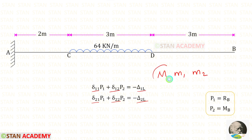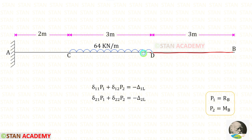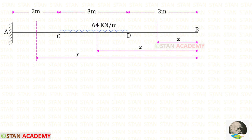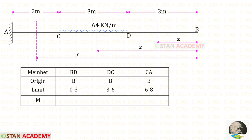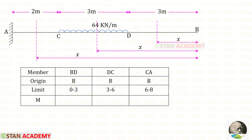First let us find the moment M using the given loads. We have to make sections in this beam. There are 3 different parts: BD, DC, and CA, so we make 3 sections — one in BD, one in DC, and one in CA. Now let us make a table. For all three sections, the origin is point B. For BD, the limit is 0 to 3; for DC, 3 to 6; and for CA, 6 to 8.